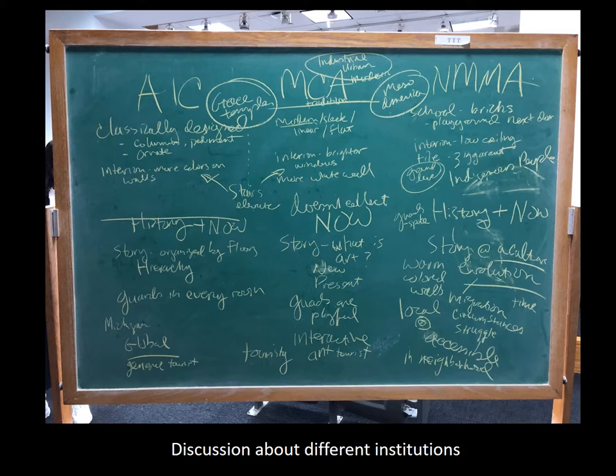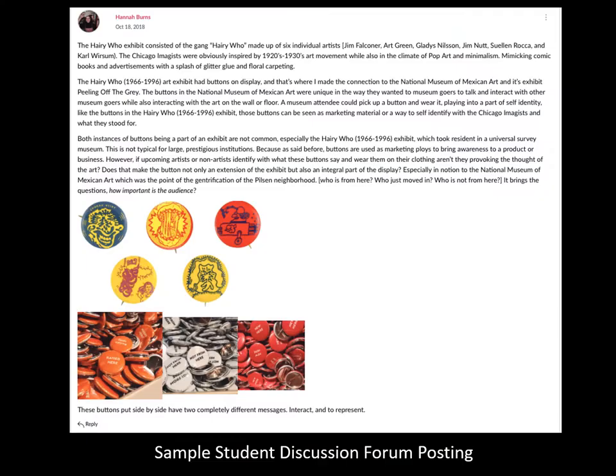We explored how museums are not neutral spaces. We learned to think about how the architecture, the wall labels — even the languages represented on the wall labels — tell us about the subtle coded agendas of cultural institutions. Here's a discussion where we compared some of those institutions: the Art Institute, the MCA, and the National Museum of Mexican Art.